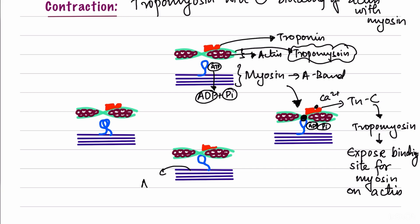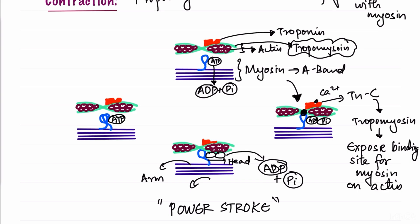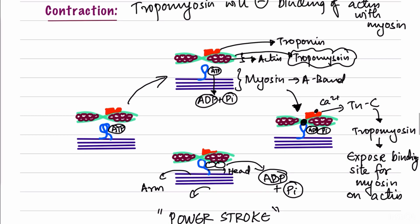The myosin head tilts toward the arm side, pulling the actin filaments along that direction — this is the power stroke, responsible for muscle contraction. During the power stroke, ADP and inorganic phosphate are released from the myosin head. The contraction cycle ends when a new ATP molecule binds to myosin, causing detachment of the myosin head from actin. The cycle then repeats with ATP being cleaved into ADP and inorganic phosphate.